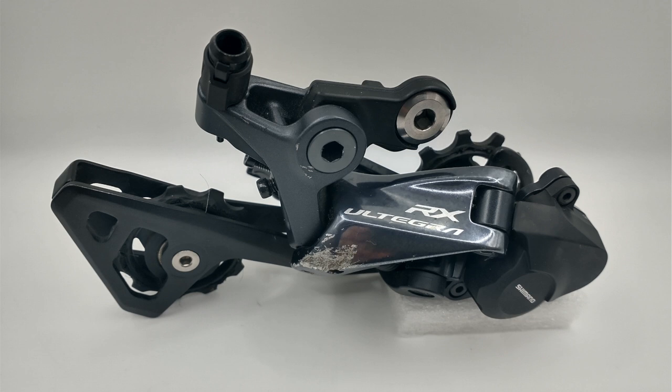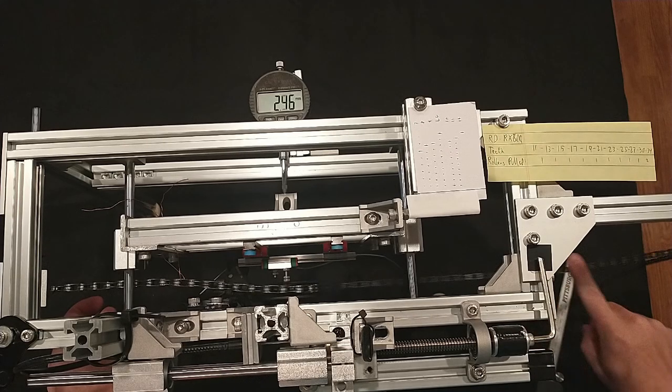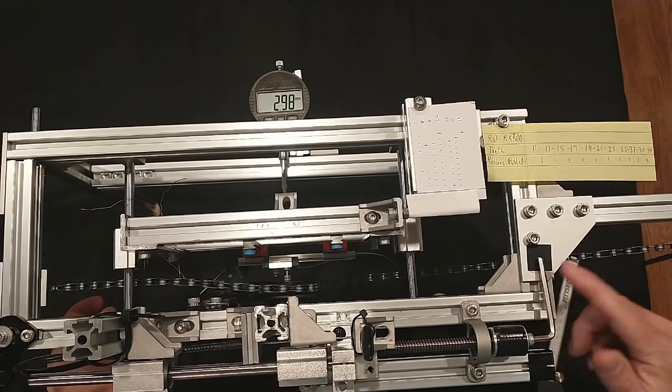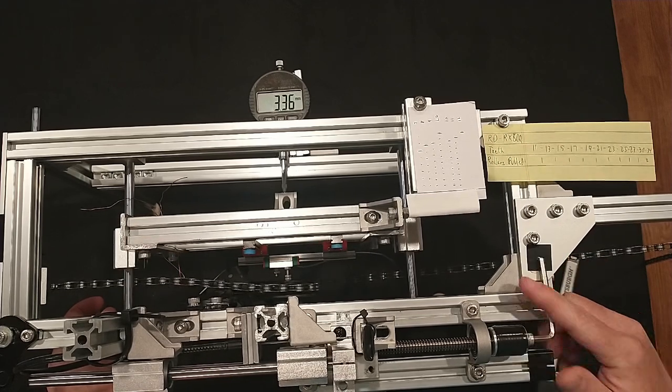Shimano's Ultegra RX RD-RX800 derailleur is one of their gravel bike 11-speed derailleurs. In this video, I'm going to measure the pull ratio and yaw of this derailleur. This particular derailleur was provided to me by Ubiquiti on the Pathless Pedal Discord. Thank you so much!